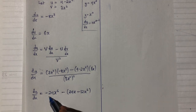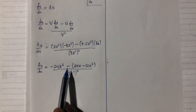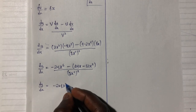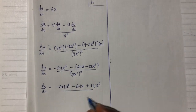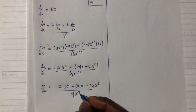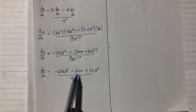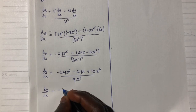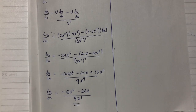We divide the result by 3x squared all squared. In the next step, applying the negative sign: dy/dx gives minus 24x to the power 5 minus 24x plus 12x to the power 5, divided by 9x to the power 4. The x⁵ terms are common, so adding 12 to minus 24 gives minus 12. The final answer is dy/dx equals (minus 12x⁵ minus 24x) all over 9x⁴.